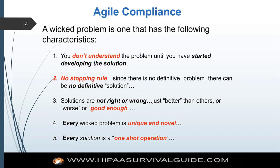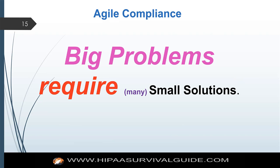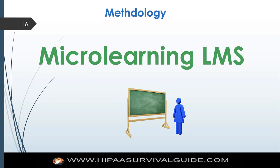Every wicked problem is unique and novel because every organization is unique and novel. It turns out that big problems like a HIPAA initiative or GDPR initiative require many, many small solutions — that's how you get there. You don't get there as a big bang type of effort, and that's what Agile does.